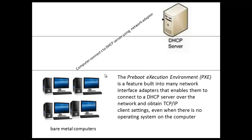Here we have a scenario. We have some client computers on the network and we refer to them as bare metal because there is no operating system on these computers — they're right out of the box. These computers need to connect to the DHCP server on the network. Since there's no operating system, there's no boot device that you can use; what you're going to be using to connect to that DHCP server is your network card.